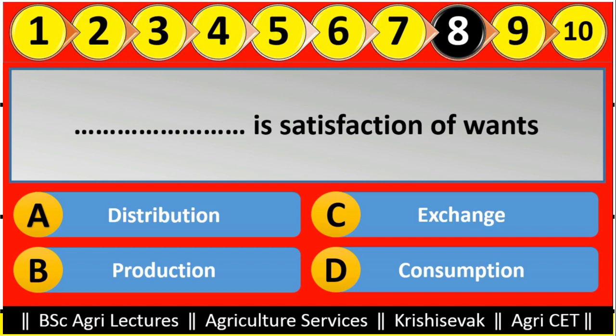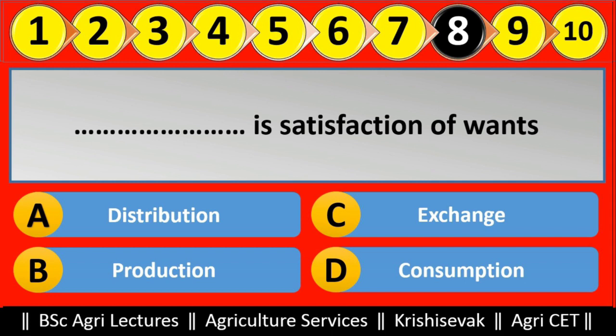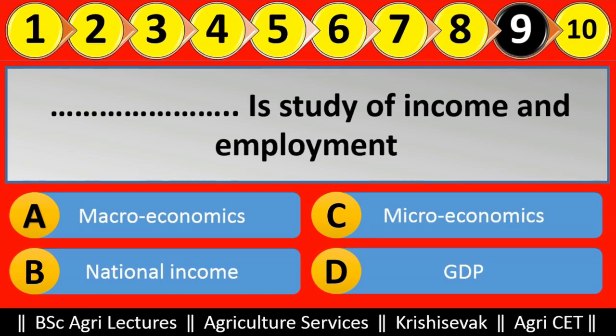Question number eighth: dash dash is satisfaction of wants. Options are: distribution, production, exchange, consumption. The right answer is option D — consumption. Consumption is the satisfaction of wants.